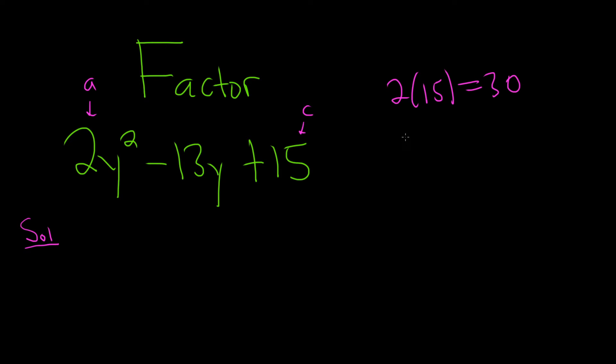So now you need two numbers that multiply to 30 and add to negative 13. You might say 2 times 15 is 30. Yeah, but that just tells us we need two numbers that multiply to 30. It doesn't have to be the 2 and the 15.